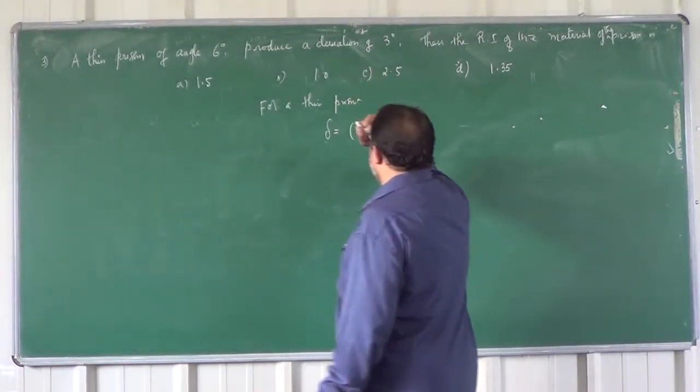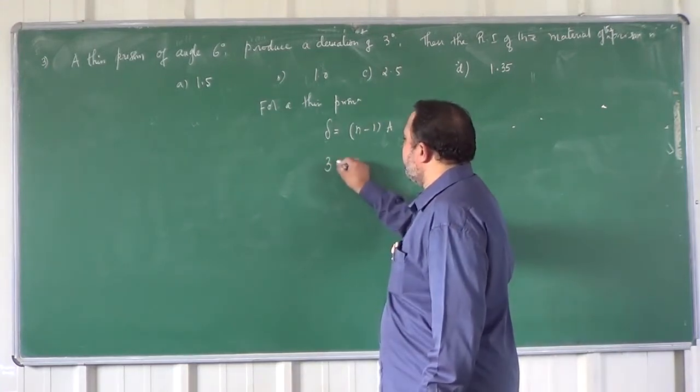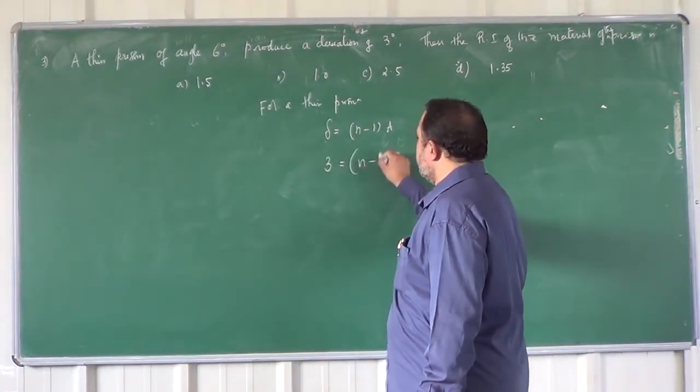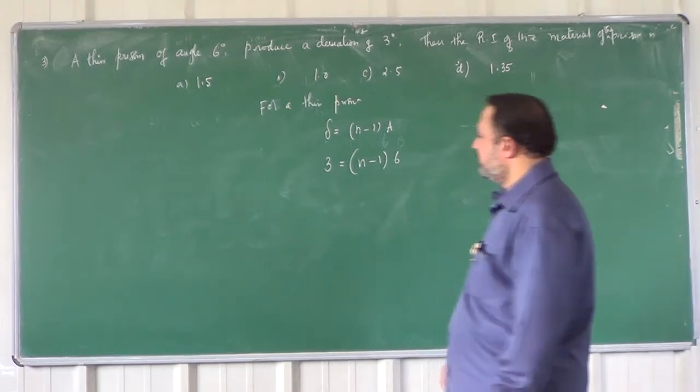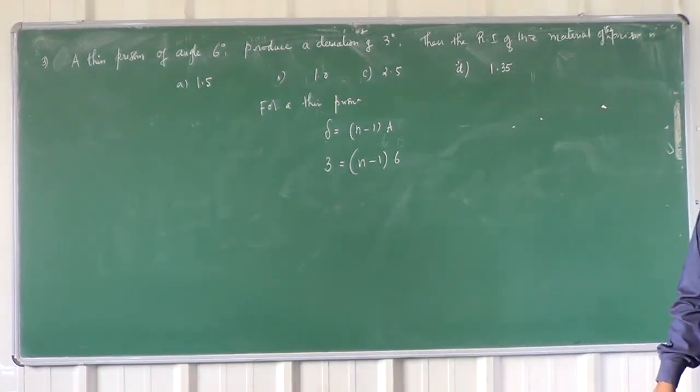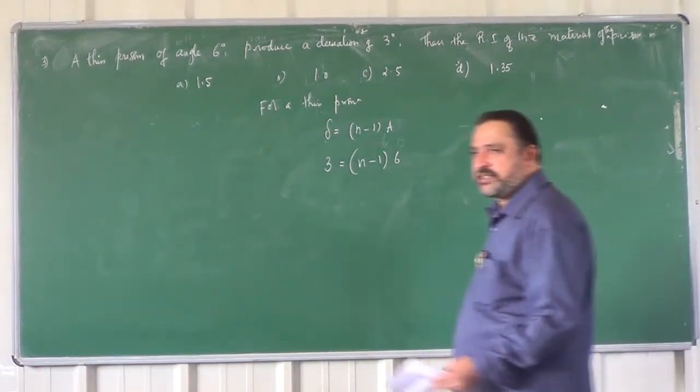Now, it is given that the deviation is 3 degrees equals n minus 1 into 6. So you calculate here for this measure.